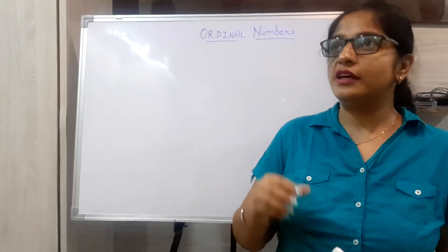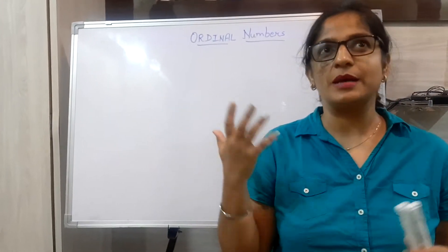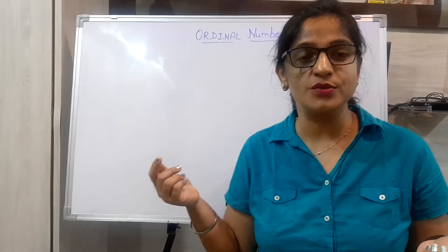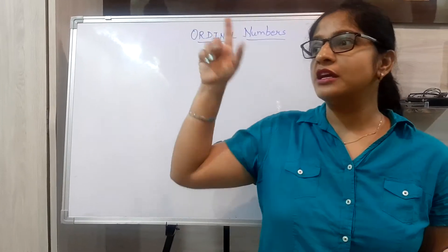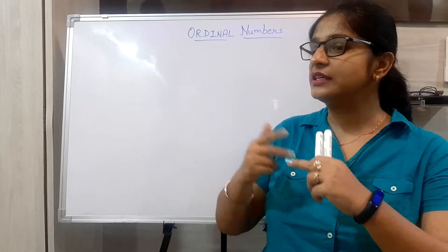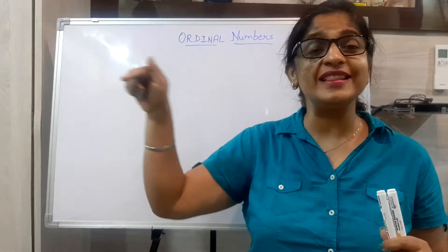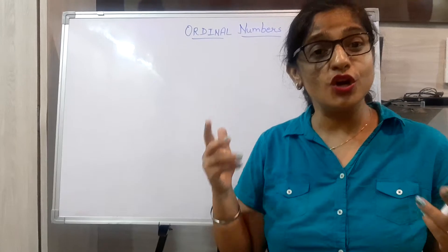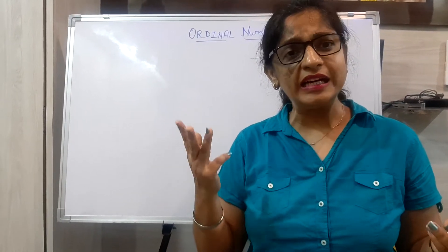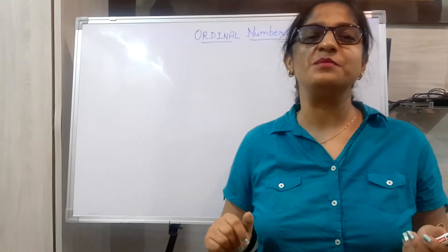You must have spoken ordinal numbers somewhere — like in your class, when somebody comes first, you say, 'Ram has come first in the class.' And when some girl is standing behind you, you say she's standing in the second position. So first, second, third — what are these? These are ordinal numbers.